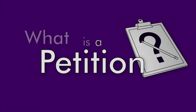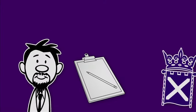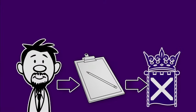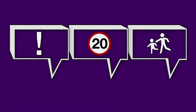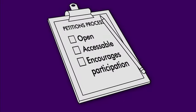What is a petition? A petition is a way for you to make the Scottish Parliament aware of an issue and request action on what you want us to do about it and why. The petitions process is open, accessible and encourages participation.